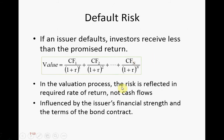In the valuation process, we will increase the discount rate or the interest rate if there is a higher risk. As a result of a higher denominator from the higher interest rate, the value would be lower. In other words, if the company has a higher risk of default, then the value or the price of its bond would be lower, although the company may pay the same coupon and same face value.